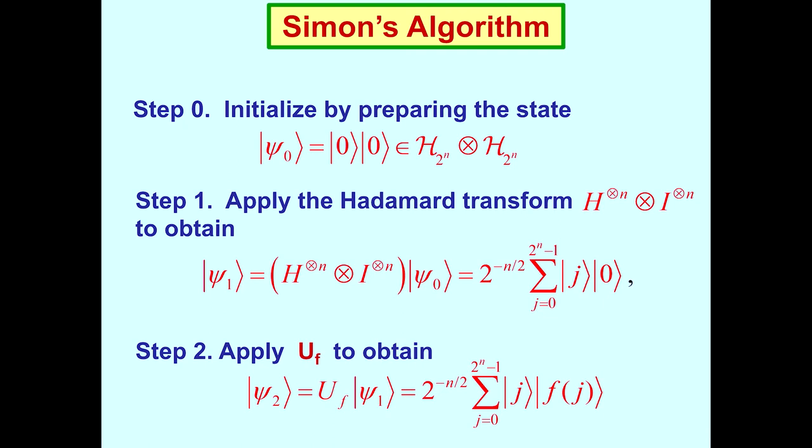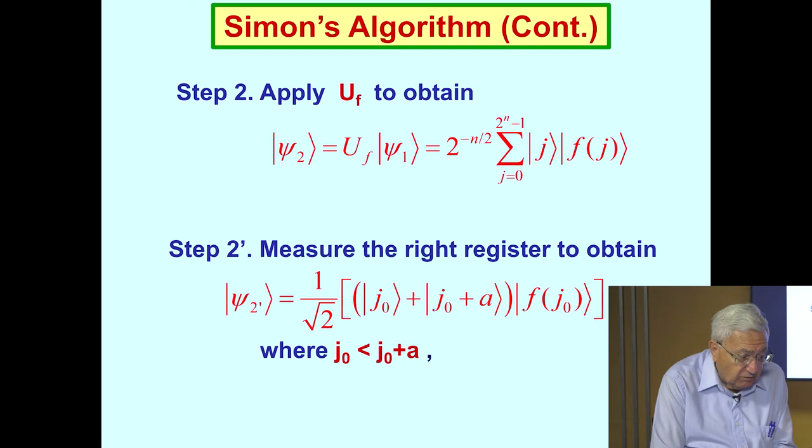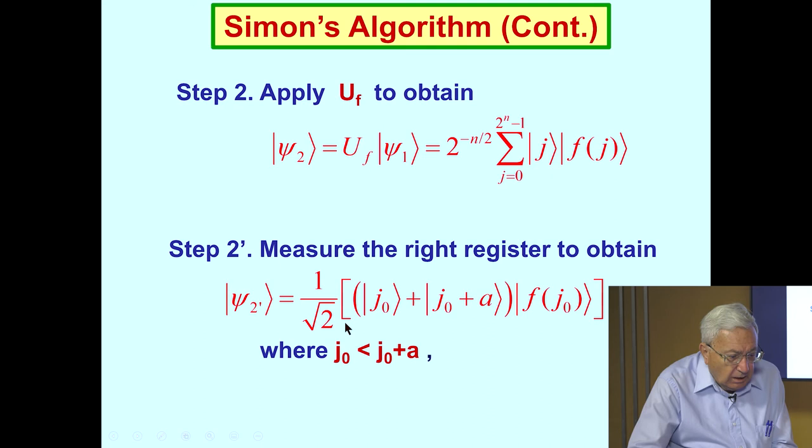Step 2, we apply U sub f. That's our oracle, represented as a unitary transformation, to transform our state into psi 1. And now we have a state which consists of a superposition of all argument function value pairs. This is an amazing superposition. Simon's algorithm applies U sub f to this. Step 2, if we'd like, we don't really need to do this, but it makes it easy to understand. And we measure the right register to obtain the following expression, where we've chosen J0 less than J0 plus A using our linear ordering.